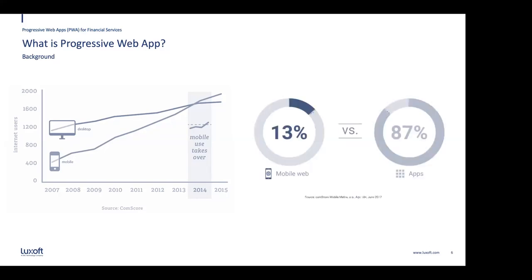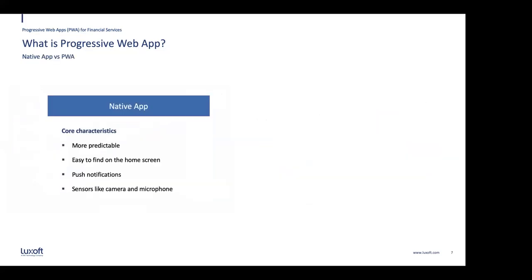On mobile, users spend most of their time in native apps rather than on the web. In fact, they spend 87% of their time on native apps versus only 13% on mobile web. When you ask why, users often say native apps are more predictable, easy to find on the home screen, and have features like push notifications and sensors like camera and microphone.